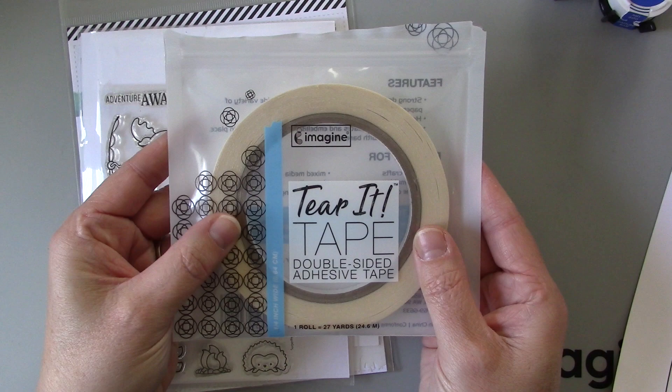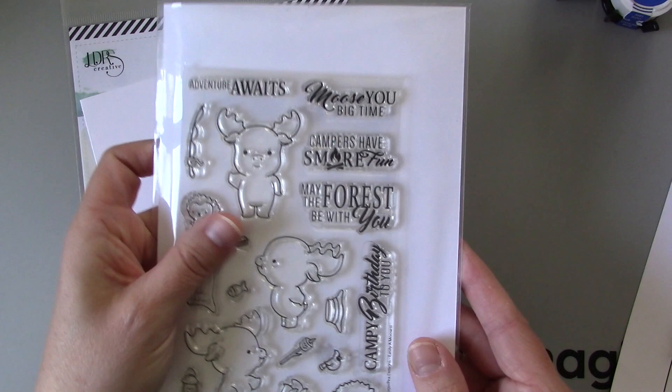I'll also be using a double-sided adhesive tape called tarot tape which is a fabulous tape for a beginning crafter and you don't need a tape gun with it.